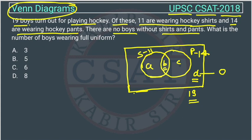This circle represents the number of boys wearing shirts, this one represents pants, and B represents those wearing both shirts and pants. The question is asking for the number of boys wearing full uniform — that means wearing hockey shirts and hockey pants — so we have to find B.